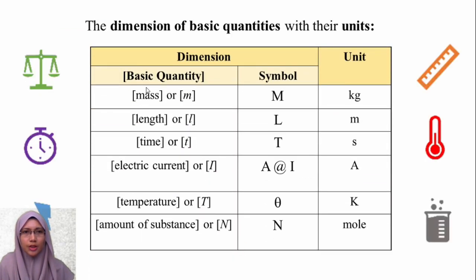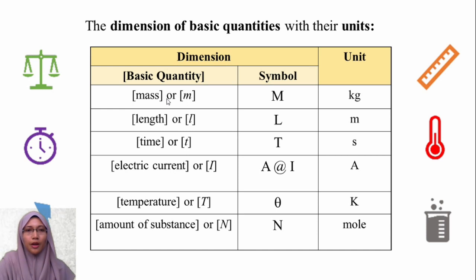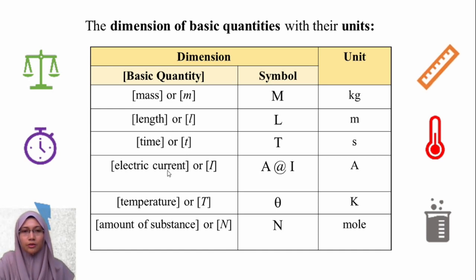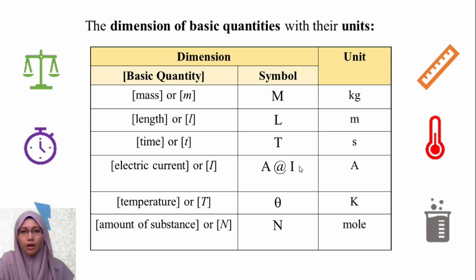These are the dimensions of basic quantities with their units. We have mass, length, time, electric current, temperature, and amount of substance, with symbols M, L, T, A or I, theta, and N respectively.